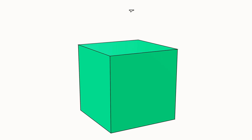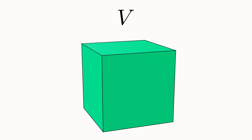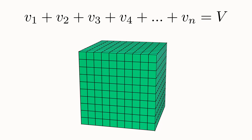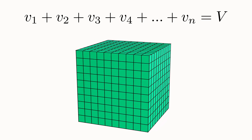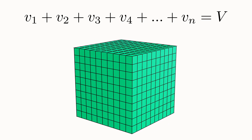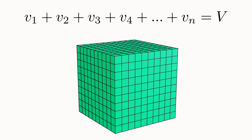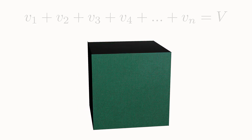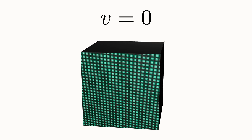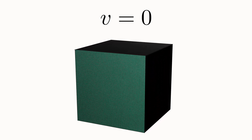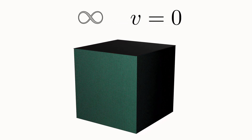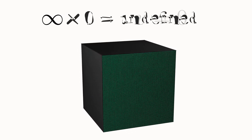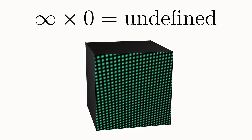A cube has a well-defined volume. If you cut it up into smaller cubes, each piece will also have its own well-defined volume that will add up to the original value of the whole thing. But what about if we cut the cube up into an infinite number of points and try to compute the volume this way? Each point has a volume of zero, but there are an infinite number of them, so the total volume suddenly becomes indeterminate.